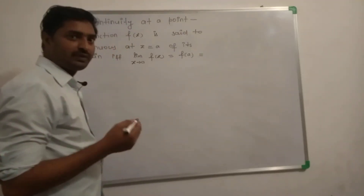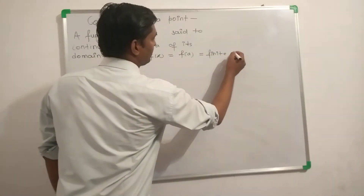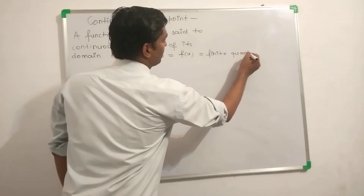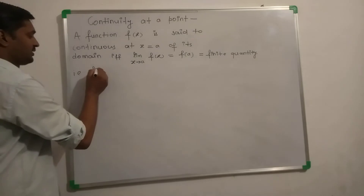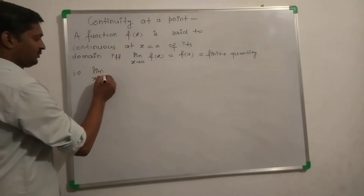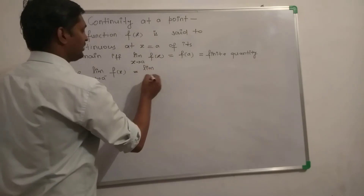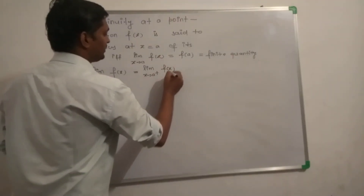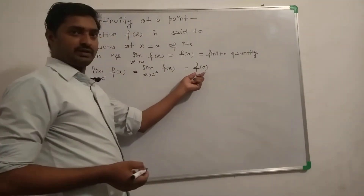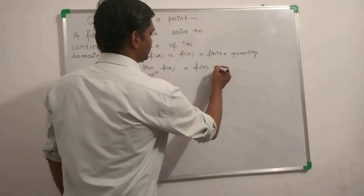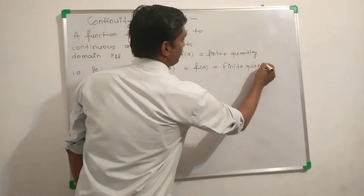This should be equal to a finite quantity. That is, the left hand limit — limit x tending to a minus of f(x) — is equal to the right hand limit — limit x tending to a plus of f(x) — which is equal to the value of the function at x = a, and this should be a finite quantity.